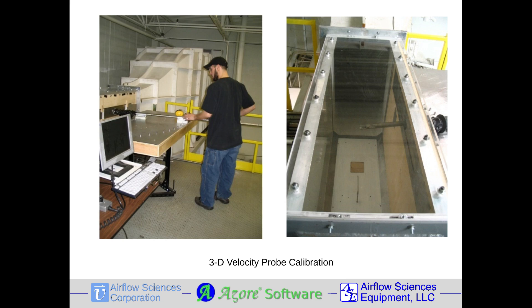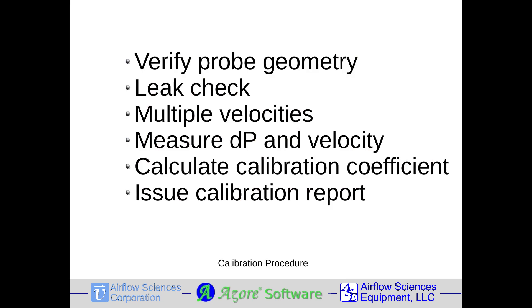The Airflow Sciences wind tunnel is large enough to accommodate all velocity and particulate sampling probes except one, the PM10 probe. This probe, shown previously, blocks 2.2% of our wind tunnel. For the calibration of a differential pressure velocity probe, like the S-type pitot, certain steps need to be followed.